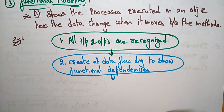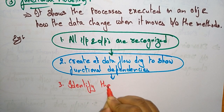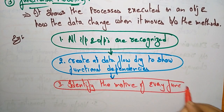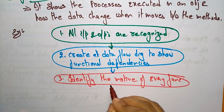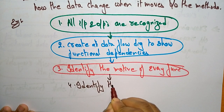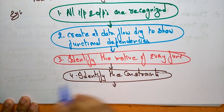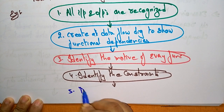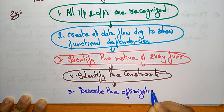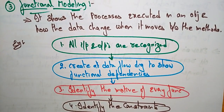After creating the data flow diagrams, the next step is to identify the motive of every function — what exactly that function is going to do. After that, you have to identify the constraints. And finally, describe the optimization criteria. This is the functional model.